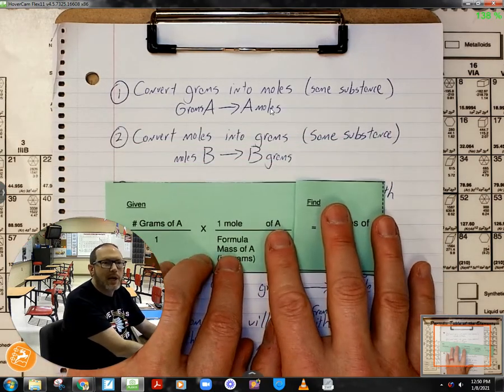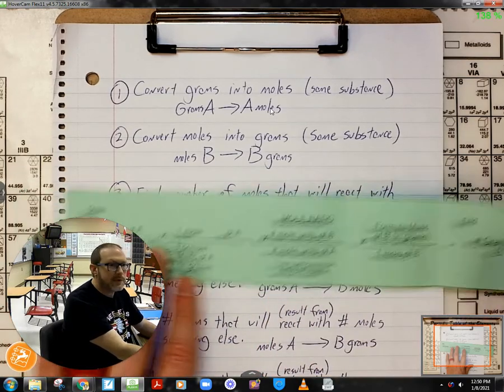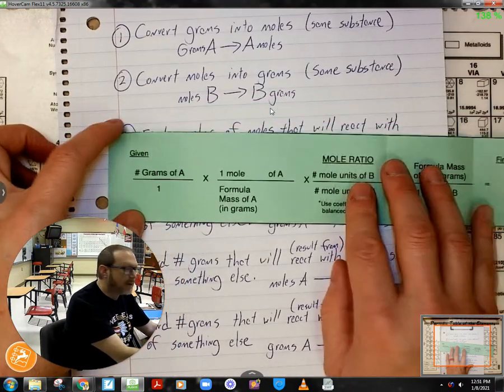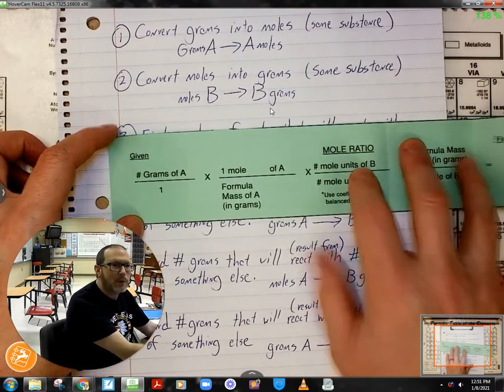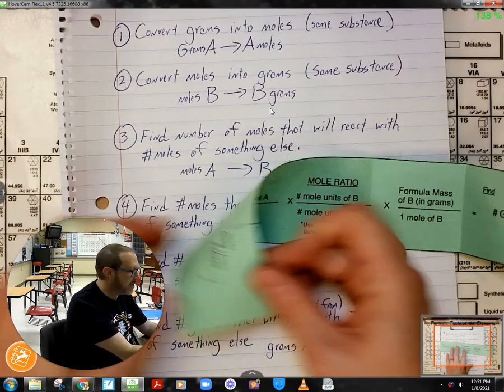I can also use it to go the other way. I can convert moles into grams. This time what I'm going to do is I'm going to start folding from the left hand side where what I'm given is moles of substance B. Now for this one, if you notice on the back it's kind of at a diagonal.